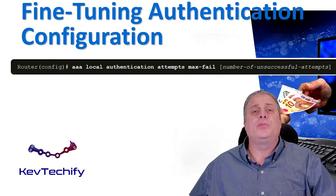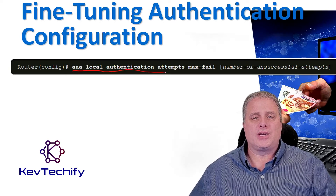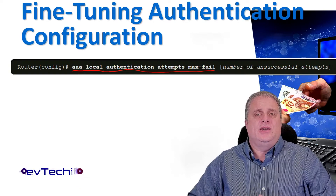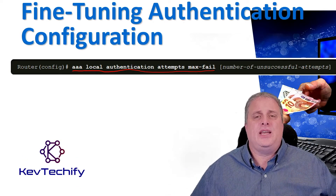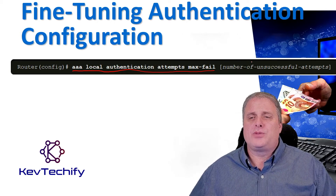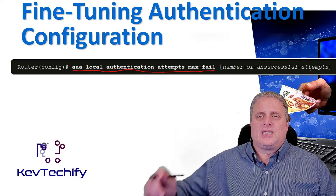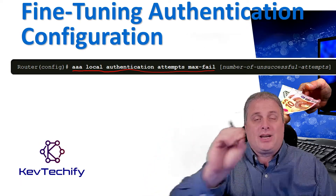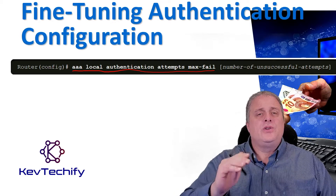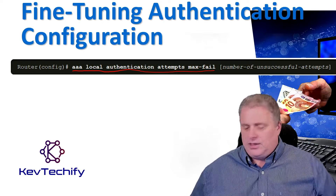Additional security can be implemented on the line using the AAA local authentication attempts max-fail command. This command secures AAA user accounts by locking accounts that have excessive failed login attempts. You use this command and then specify the number of unsuccessful logins — that is the number of unsuccessful login attempts before a connection is dropped and that user account is locked. The locked user account remains locked until you, the administrator, manually go in and clear it.